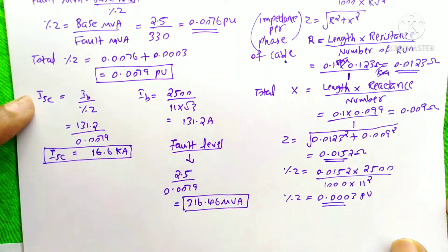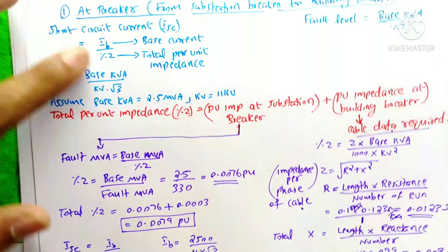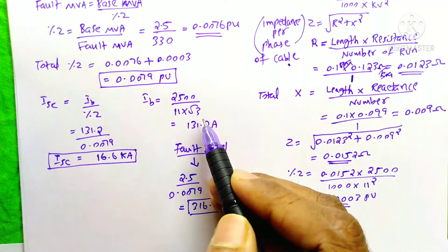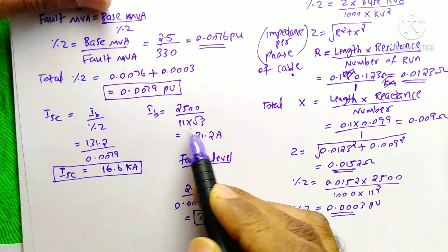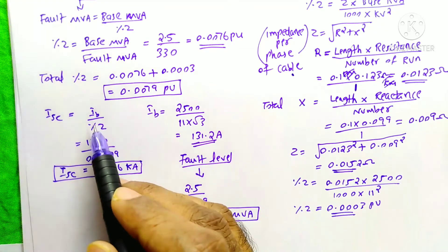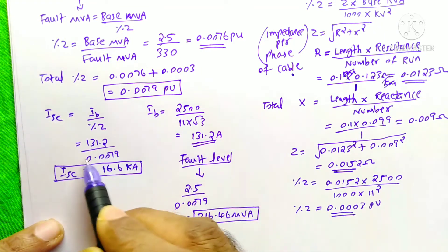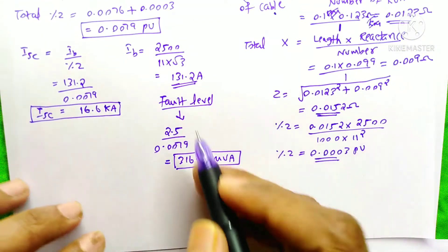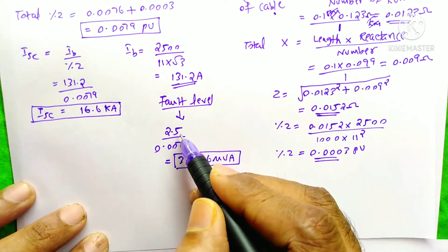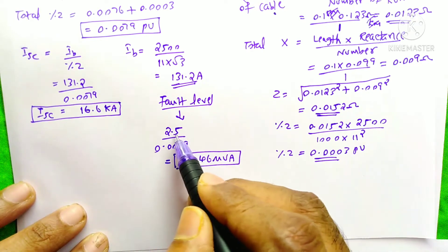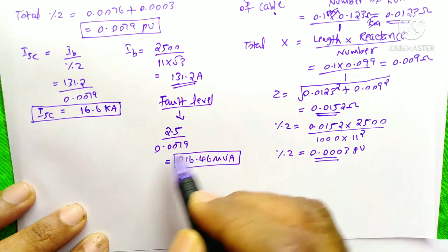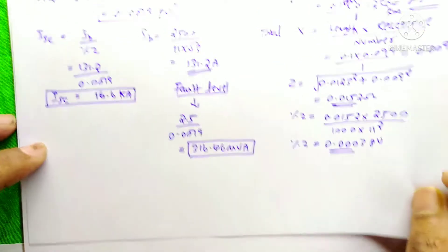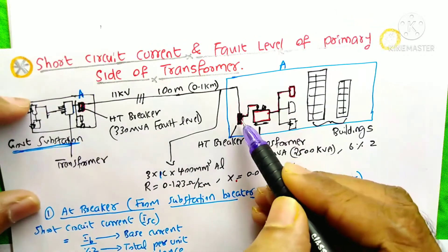Substituting into the main equations: the base current IB = 2500 KVA / (11 KV × √3) = 131.2 Amps. The short circuit current ISC = IB / total per unit impedance = 131.2 / 0.0079 = 16.6 kilo Amps. The fault level = base KVA / per unit impedance = 2.5 MVA / 0.0079 = 316.46 MVA. Thus we have found the short circuit current and fault level at the building breaker.